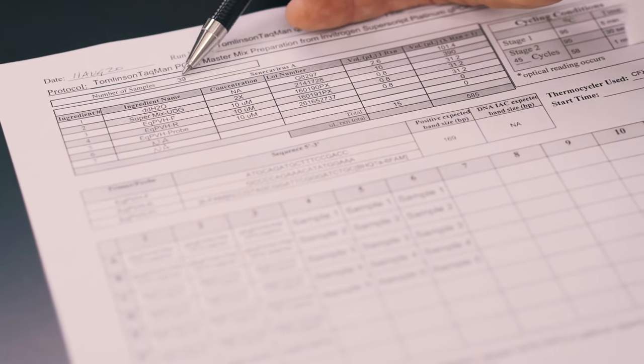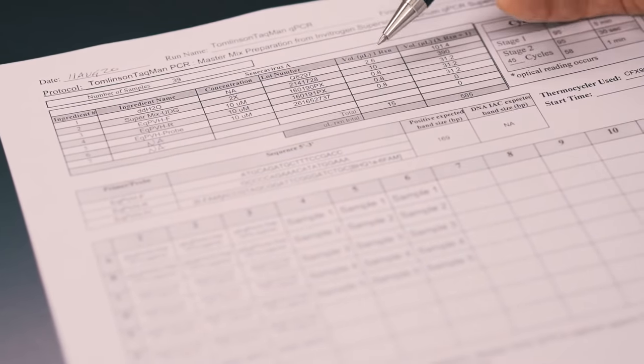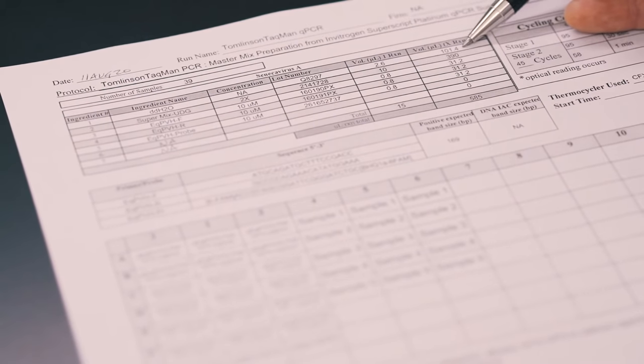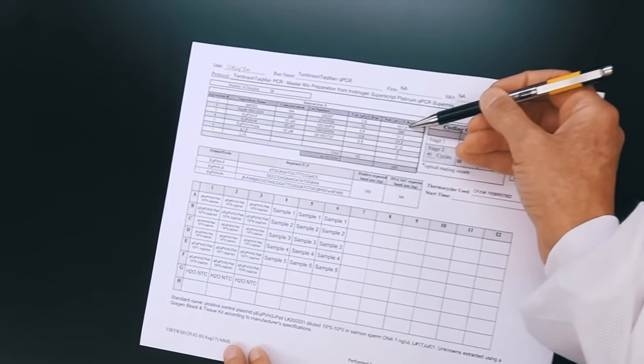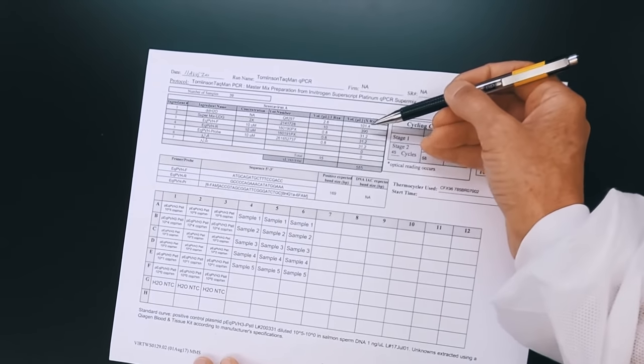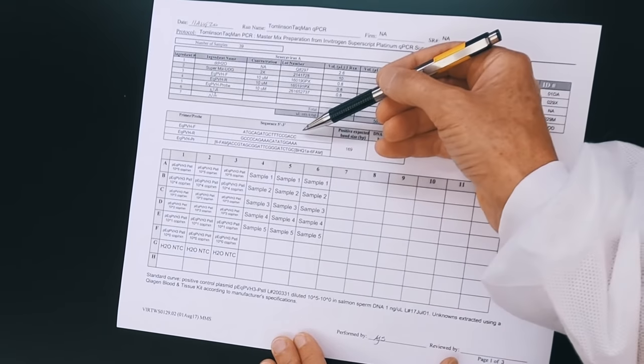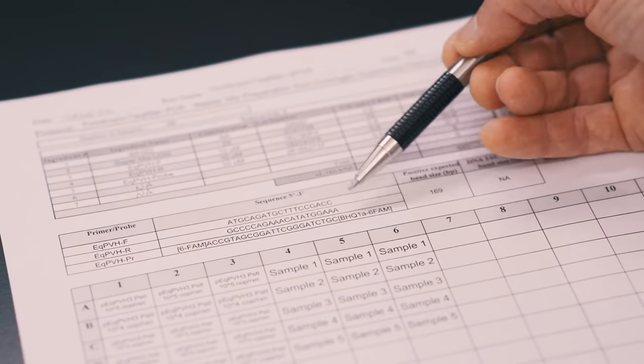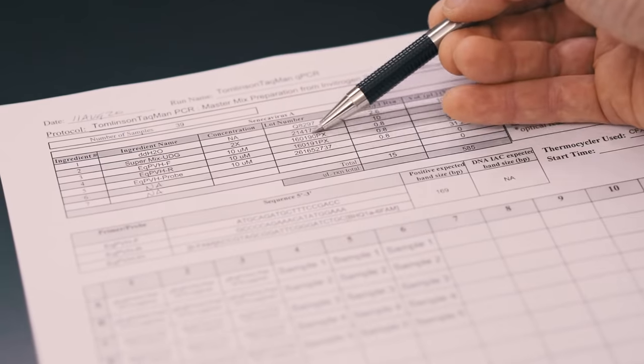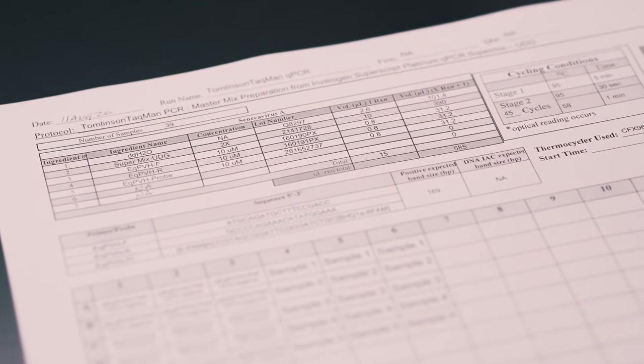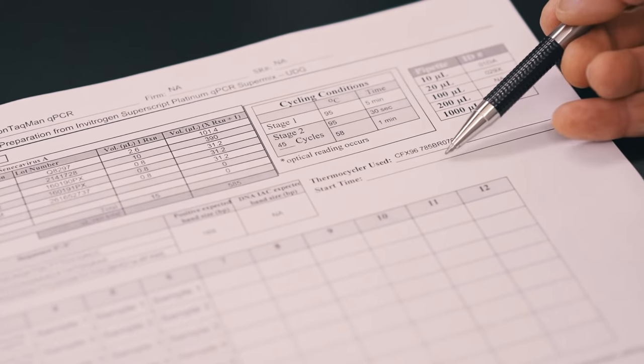The primers and probes are all at 10 micromolar. And up here, we can put in how many samples we want to run. So in this case, I'm saying 39 samples. This worksheet in its electronic format will automatically calculate this plus one times this to give this volume of 101.4 microliters. So to set up enough reaction mix for this entire experiment, we'll use 101.4 microliters of water, 390 microliters of master mix and 31.2 microliters of each primer and probe. The primers and the probe are described below the sequence and how long the amplicon is to be expected. The lot numbers for the primers and probe are also in the table above. The thermal cycler that we're going to use, its ID number is here. And when we start the reaction, we'll put down what time we started it.